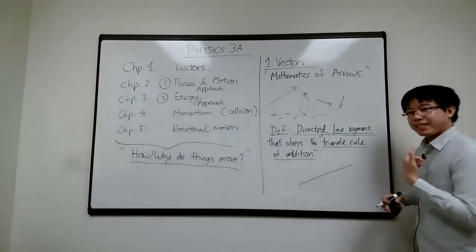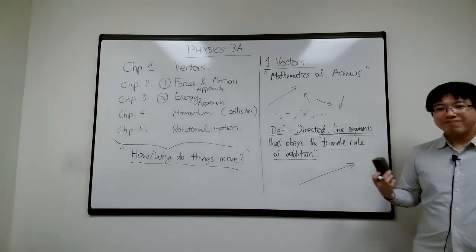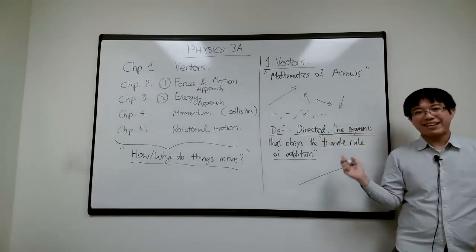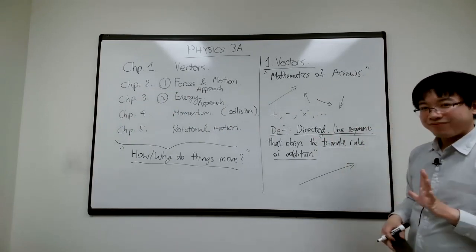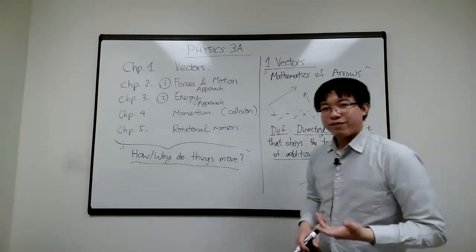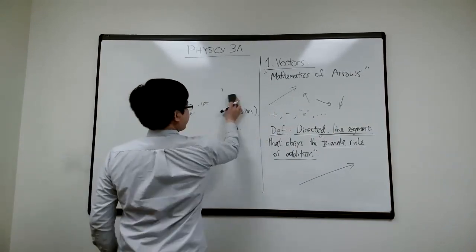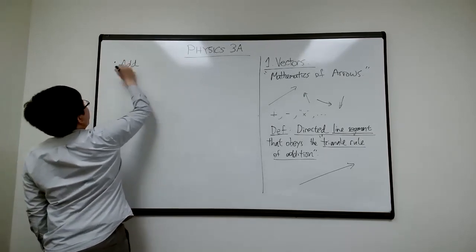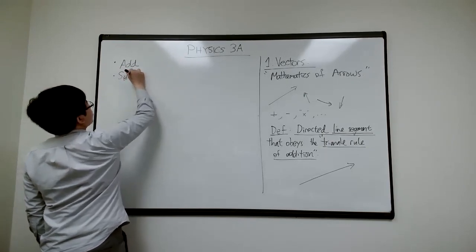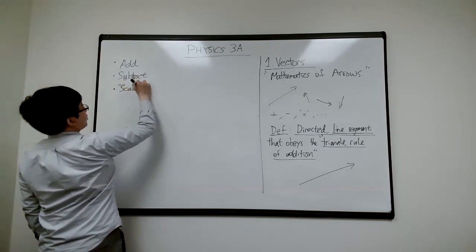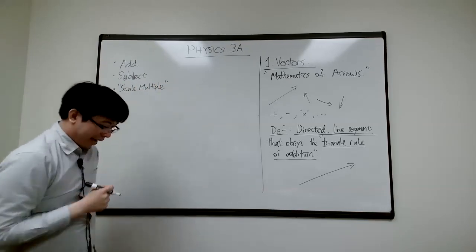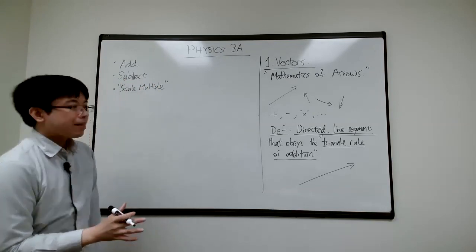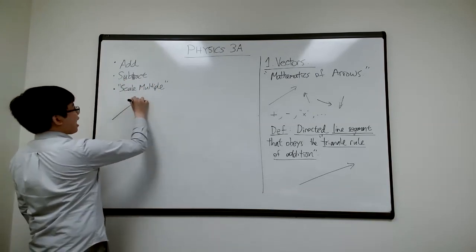If you want to confuse everyone, say it's a directed line segment. If you want to make everyone understand, it's an arrow. It has the criterion that it obeys the triangle rule of addition. Today we'll learn three operations: how to add, subtract, and scale-multiply vectors. There's more you can do, but those will be in the second lecture.